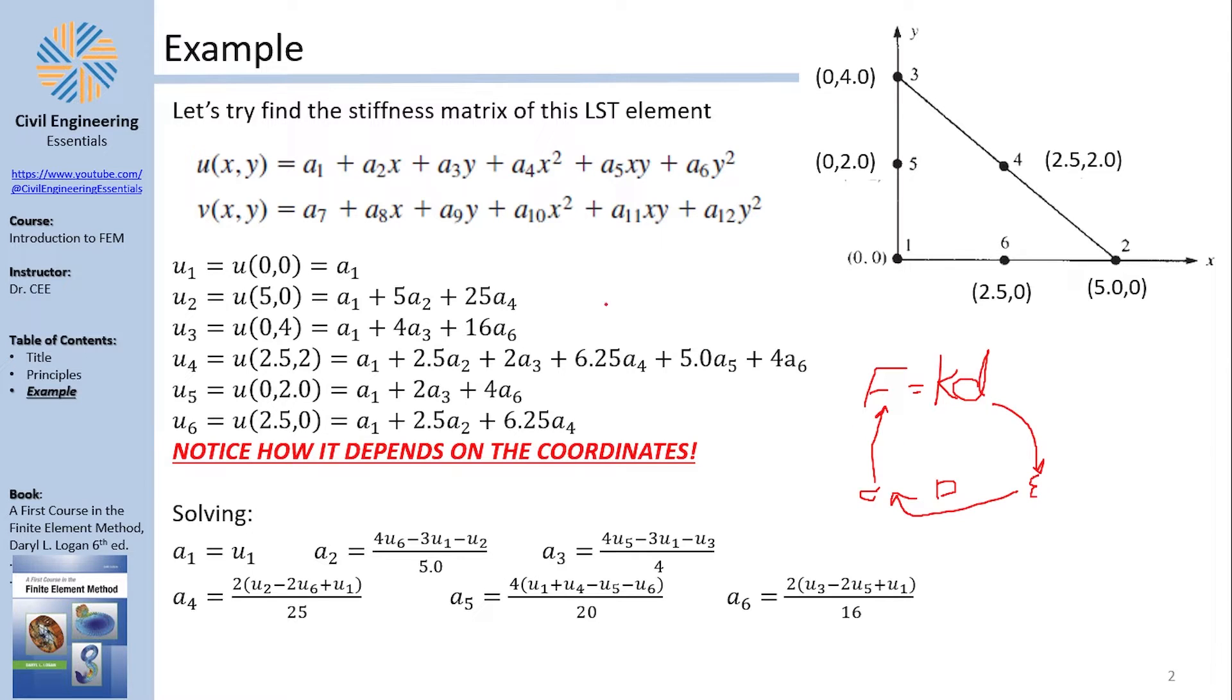Now to do that, I need to find my displacement, which needs to define my displacement function. Now a quick reminder is that this displacement function has been explained in a previous video, I will be linking in the top right, and this is based on Pascal's triangles. Check out the previous video if you want to have more details. Now I want to replace the a's with the degrees of freedom u1, u2, and so on, until u6.